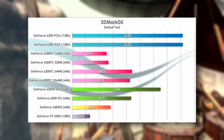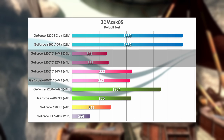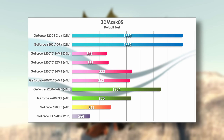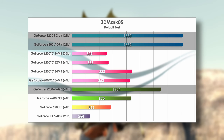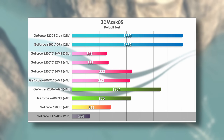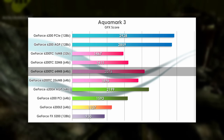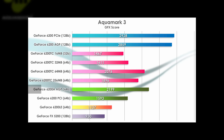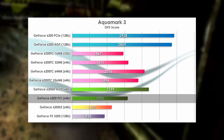In 3DMark 05, the Turbo Cache cards all do really poorly. The 16MB and 32MB cards simply don't have enough VRAM to reach their potential, and the 64MB and 256MB cards score about the same — well above the other two by around 70%. Puzzlingly, the AGP 6200A does far better than all the other Turbo Cache cards, even nearing the 128-bit cards — no clear explanation for that. The 6200 PCI scores about the same as the best Turbo Cache cards, while the FX 5200 limps along well behind. Aquamark 3 puts the 64MB 6200 above the rest, with the 256MB card slightly behind, not taking advantage of the extra PCI Express bandwidth. The AGP 6200A scores above all Turbo Cache cards again, and the PCI 6200 continues to do quite well.